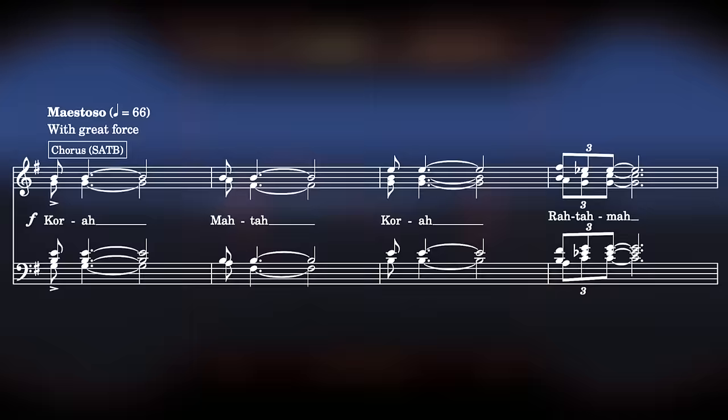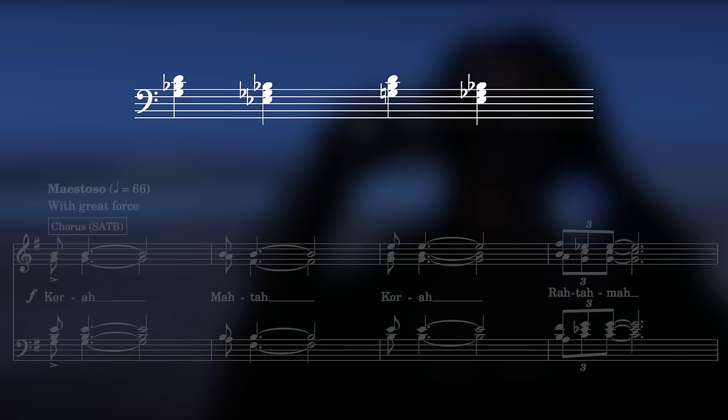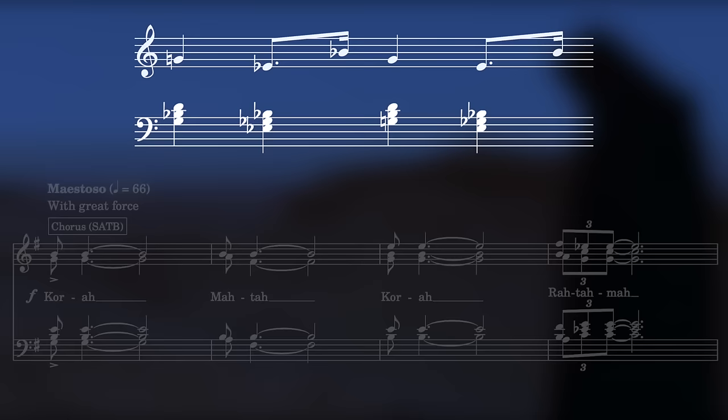Transposed up a minor third, this becomes G minor and E flat minor, which as you can probably hear are the two chords that provide the harmonic basis for the Imperial March. But as soon as the C minor is heard, it disappears, and we return to E minor, this time present in the form of an ostinato.